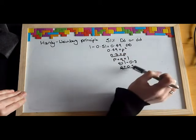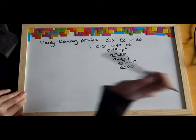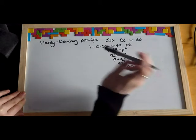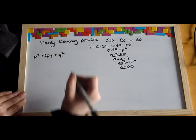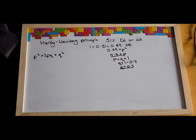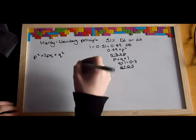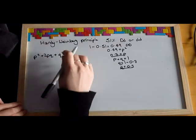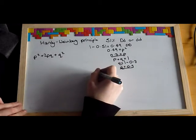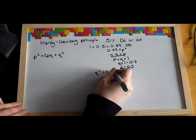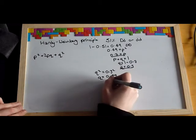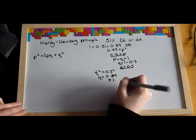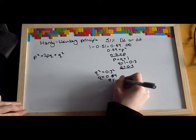Now you have the values of P and Q. You can work out anything using the formula P squared plus 2PQ plus Q squared. To find the predicted frequency of the population with homozygous recessive alleles — people with Q squared, having both recessive alleles — Q squared equals 0.3 squared, which equals 0.09. So 9% of the population have the alleles dd.